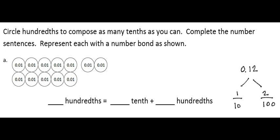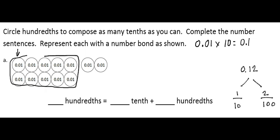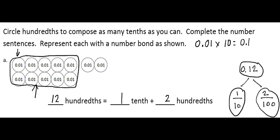The next section says to circle hundredths to compose as many tenths as you can, complete the number sentences, and represent each with a number bond. On my place value discs, each disc is one hundredth, represented as 0.01. It takes 10 hundredths to equal one tenth, so I'm going to circle 10. Those 10 hundredths equal one tenth, and then I have two more hundredths. Altogether I have 12 hundredths. The 12 hundredths equals the one tenth — the group I circled — and then two more hundredths. Twelve hundredths in decimal form is 0.12. The 1 stands for one tenth; the 2 stands for the two extra hundredths.